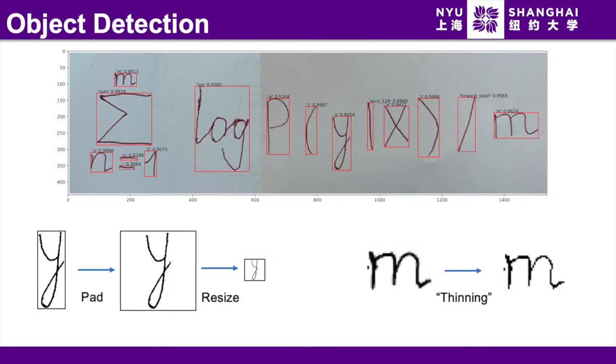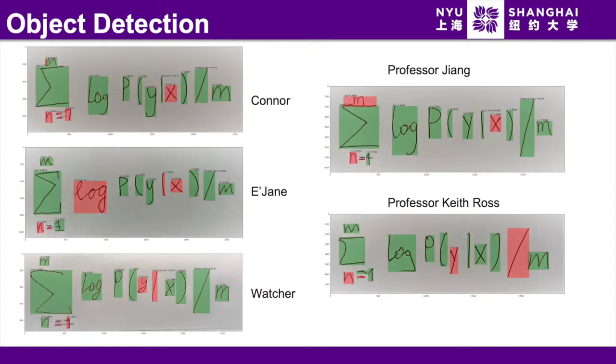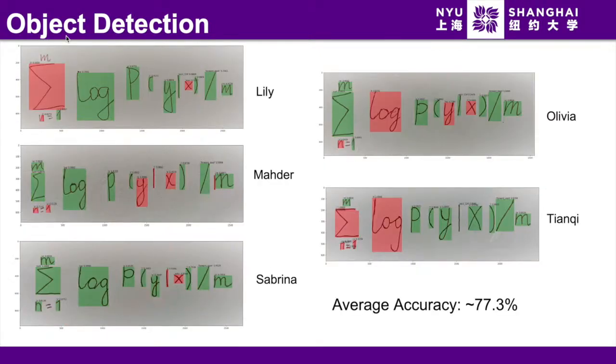And for the purpose of converting into LaTeX, we also record the coordinates of the boxes. We manually checked the predictions, and we highlight a box with correct prediction in green and those with wrong prediction in red. We use the same algorithm on the equations collected from different people. And here are the results. The average accuracy in this case is about 77.3% on 10 examples.